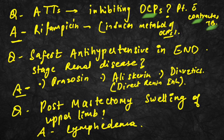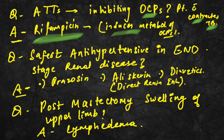Rifampicin is the answer. It inhibits OCPs because it induces the metabolism of OCPs. That is why patients on ATT (anti-tubercular therapy) are advised to use a different contraceptive method instead of OCPs.